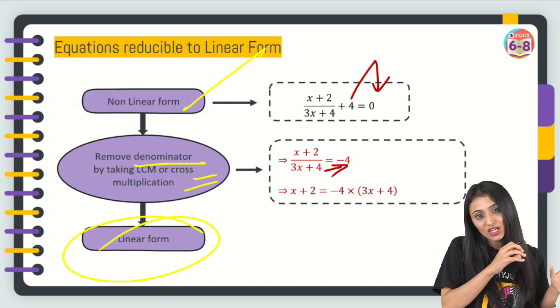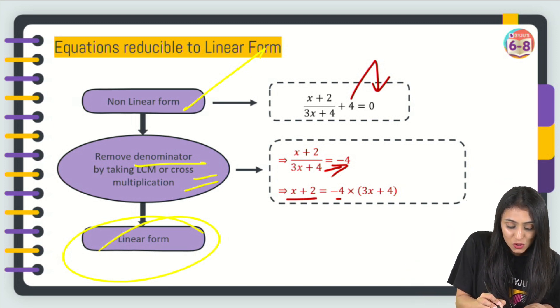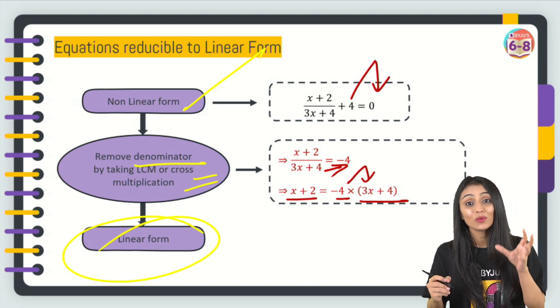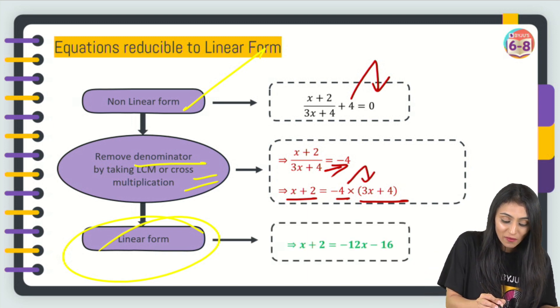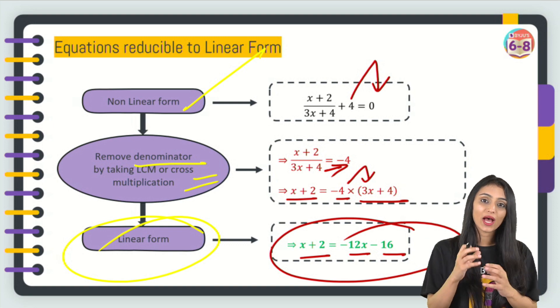So x + 2 equals -4 times (3x + 4). This -4 will be multiplied with 3x as well as with 4. What do you get? You have x + 2 = -12x - 16. So now it is in the linear form. That's how we reduce it. Now let's try out a word problem based on this.